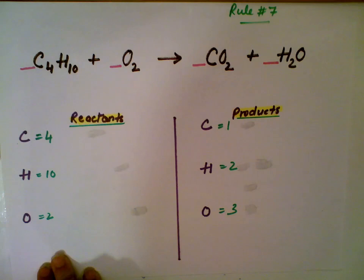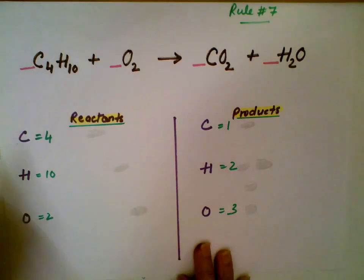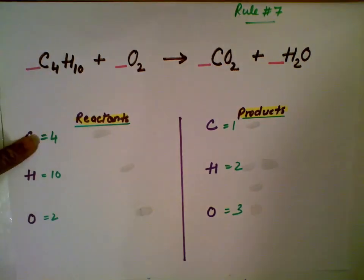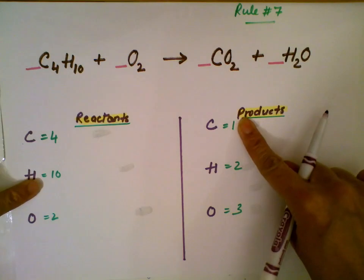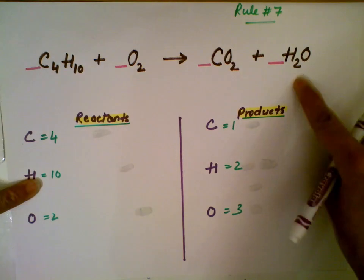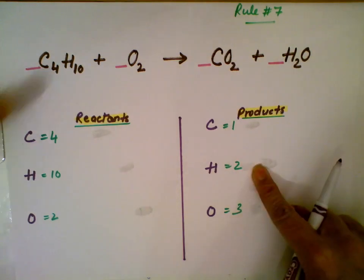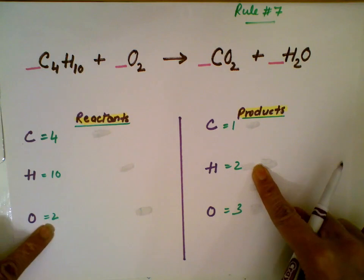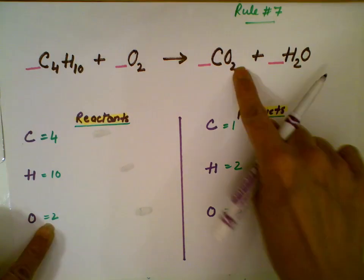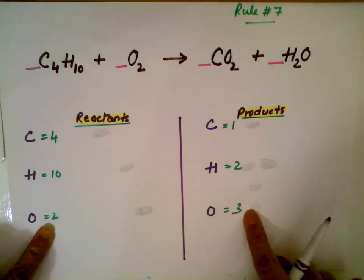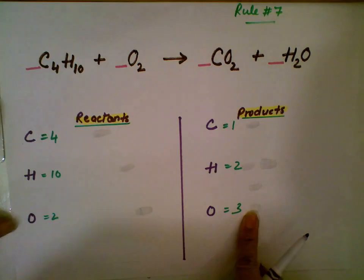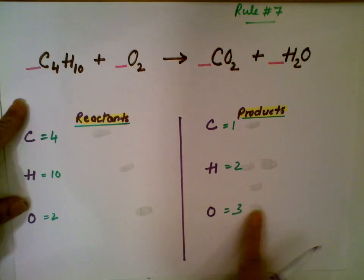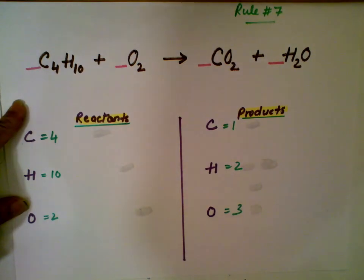Let's look at this next example. We're going to do the same thing. Here we have 4 carbon atoms and 1 carbon atom on the other side, 10 hydrogen atoms and 2 hydrogen atoms, 2 oxygen atoms here and 2 plus 1 giving 3 oxygen atoms on the other side. It's not balanced, so we have to balance them.